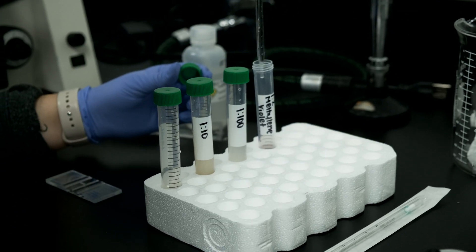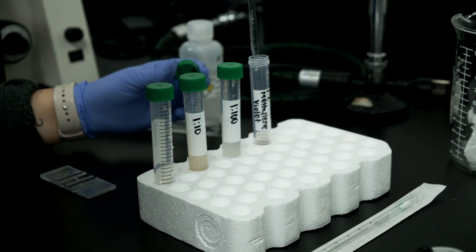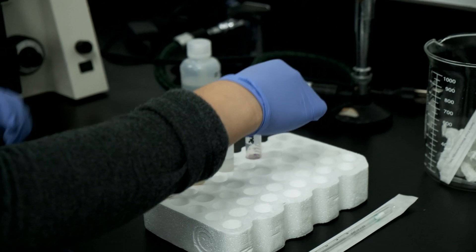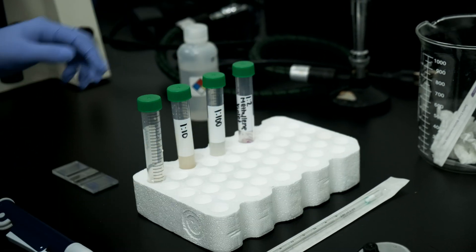Now transfer 1 milliliter of your diluted sample into a new conical tube. Transfer 1 milliliter of your stain into the same tube, creating a 1 to 200 dilution.